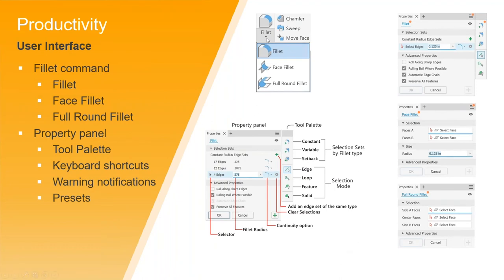Getting into the fillet command — now in the dropdown menu for a fillet, they have separated out the face fillet and full round fillet into their own tool buttons. The fillet browser is now able to be docked to the left side of your screen. A lot of the same functionality is what you've seen in older versions of Inventor, it's just that they've now made it so you can have it docked to your panel — just like the extrude, revolve, loft, and sweep commands.